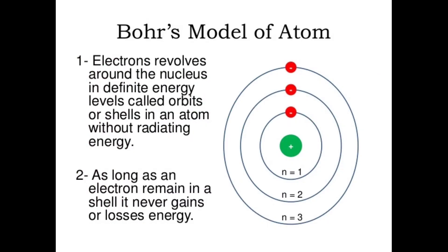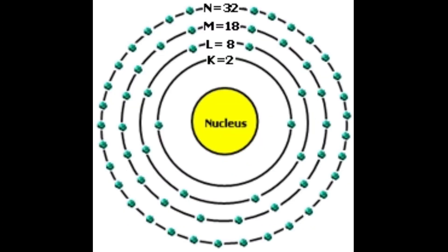Number three: The energy levels are represented by an integer n equals to 1, 2, 3, and so on, known as the quantum number. This range of quantum number starts from nucleus side with n equals to 1 having the lowest energy level. The orbits n equals to 1, 2, 3, 4, etc. are assigned as K, L, M, N, etc. shells.